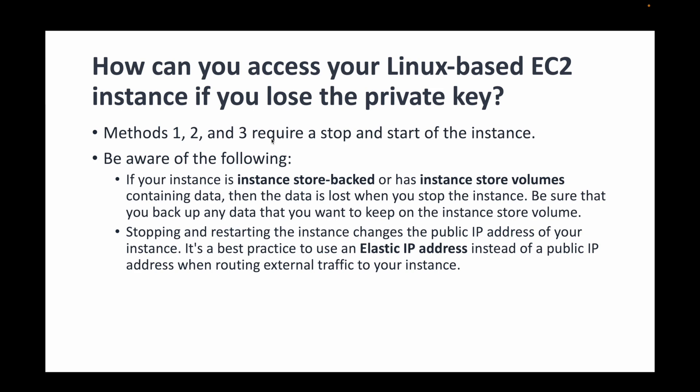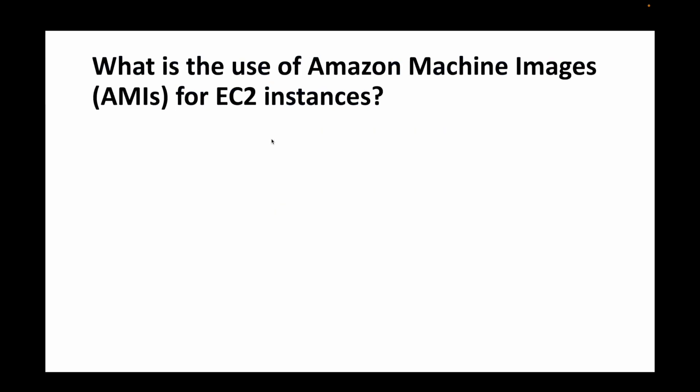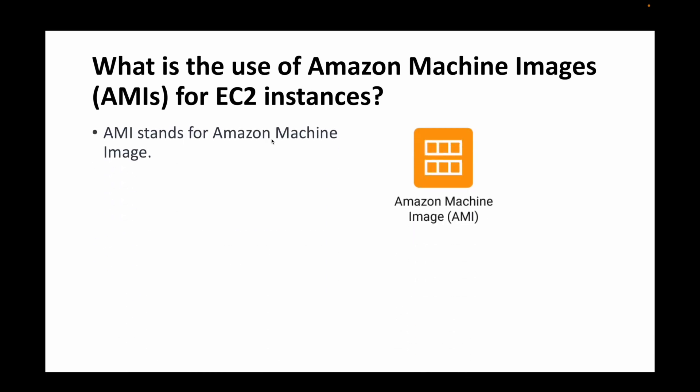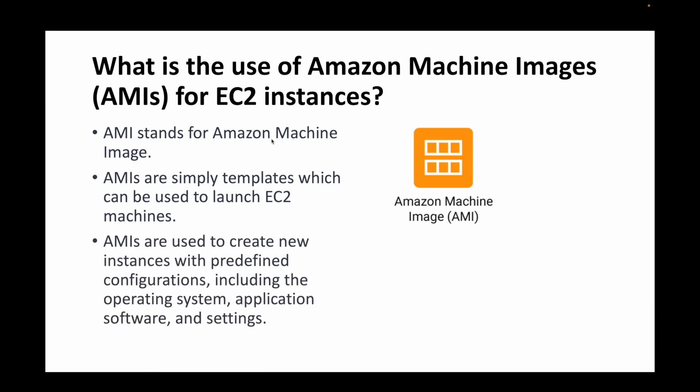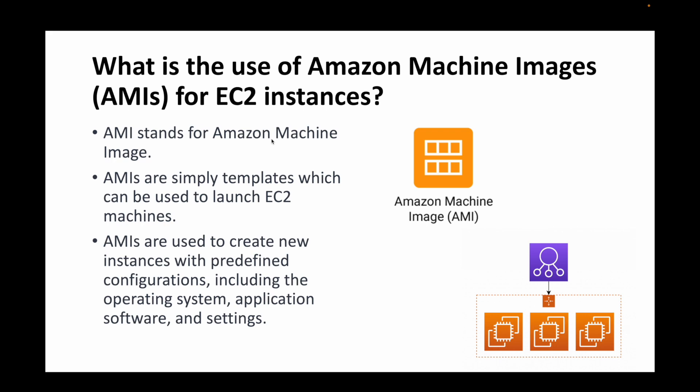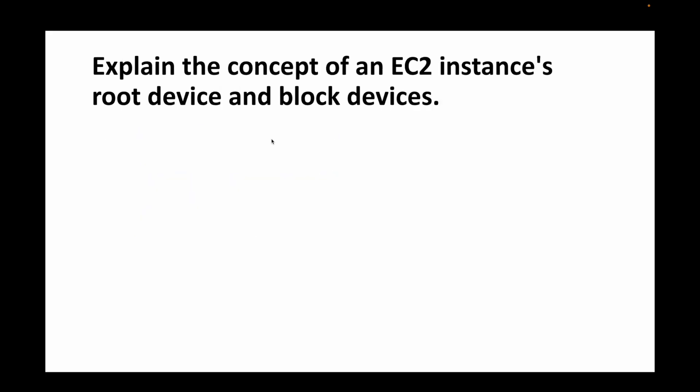The next question is: what is the use of AMIs — Amazon Machine Images — for your EC2 instances? An AMI is simply a template. Whenever we want to launch EC2 instances, we use AMIs to specify the operating system, any pre-configured settings, and the volume types. AMIs are used to create virtual machines with predefined configurations, including your operating system, application servers, and settings. AMIs are mandatory — without an AMI, you cannot launch an instance.